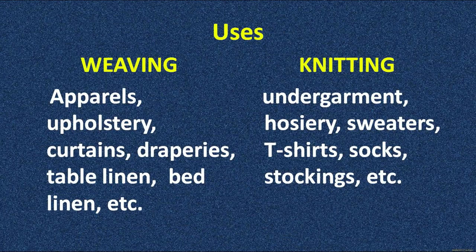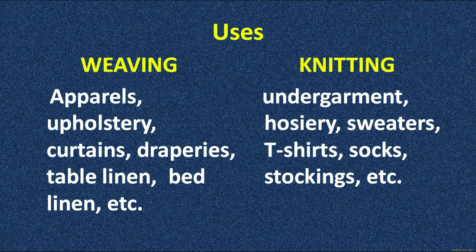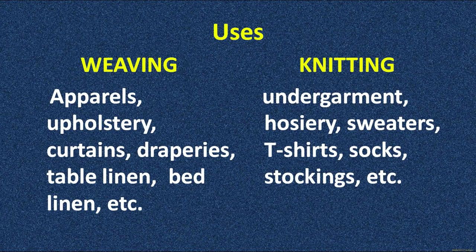Now we discuss the uses of articles made by each method. Articles made by the weaving process can be used in making apparels, upholstery, curtains, draperies, table linen, bed linen, and many other garments. Knitted garments can be used for making undergarments, hosiery, sweaters, t-shirts, stockings, socks, and many more things. The process of knitting can be further enhanced to incorporate various designs and create more beautiful patterns and sequins.